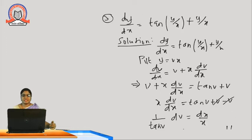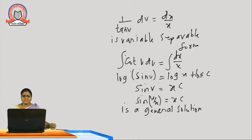Next problem: dy/dx equal to tan(y/x) plus y/x. The degree of x and y variables is 1, so this is a homogeneous equation. Using substitution y equal to vx, dy/dx equal to v plus x dv/dx. Substituting: v plus x dv/dx equal to tan v plus v. Gathering for the separable method, we get (1/tan v) dv equal to dx/x. Integrating, the integral of cot v is log sin v, so log sin v equal to log x plus log c, giving sin v equal to xc. Substituting v equal to y/x, the general solution is sin(y/x) equal to xc.